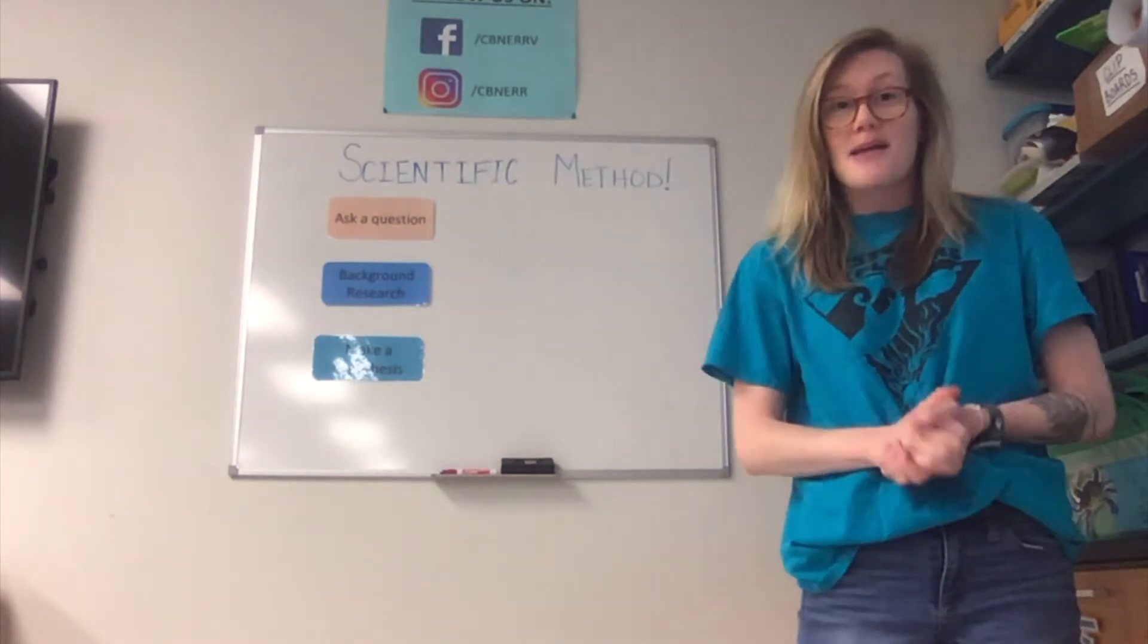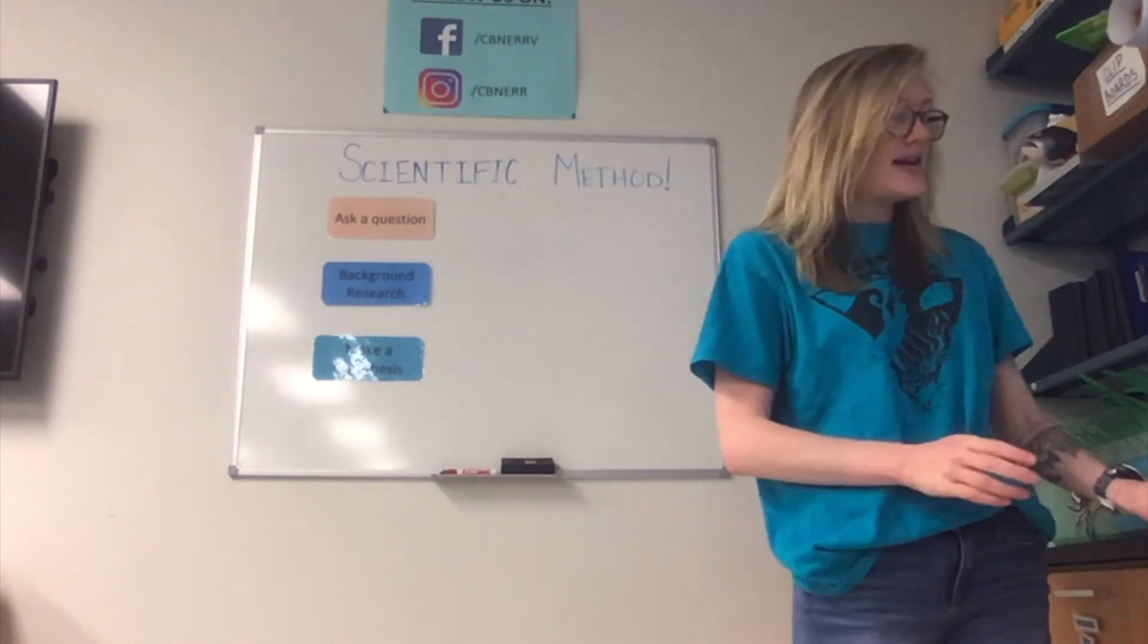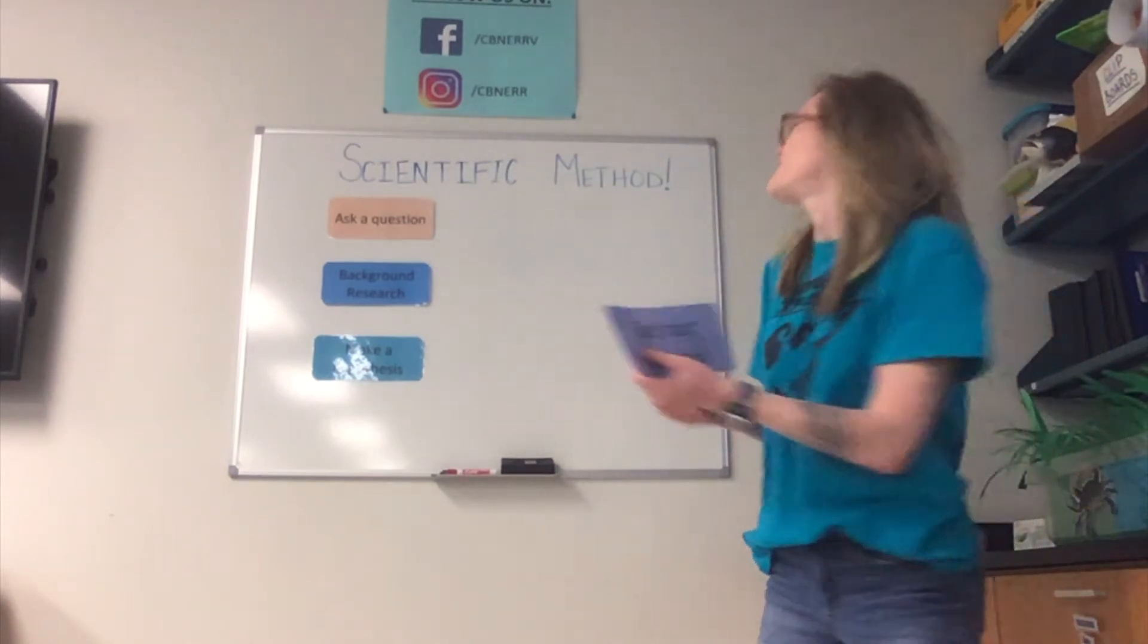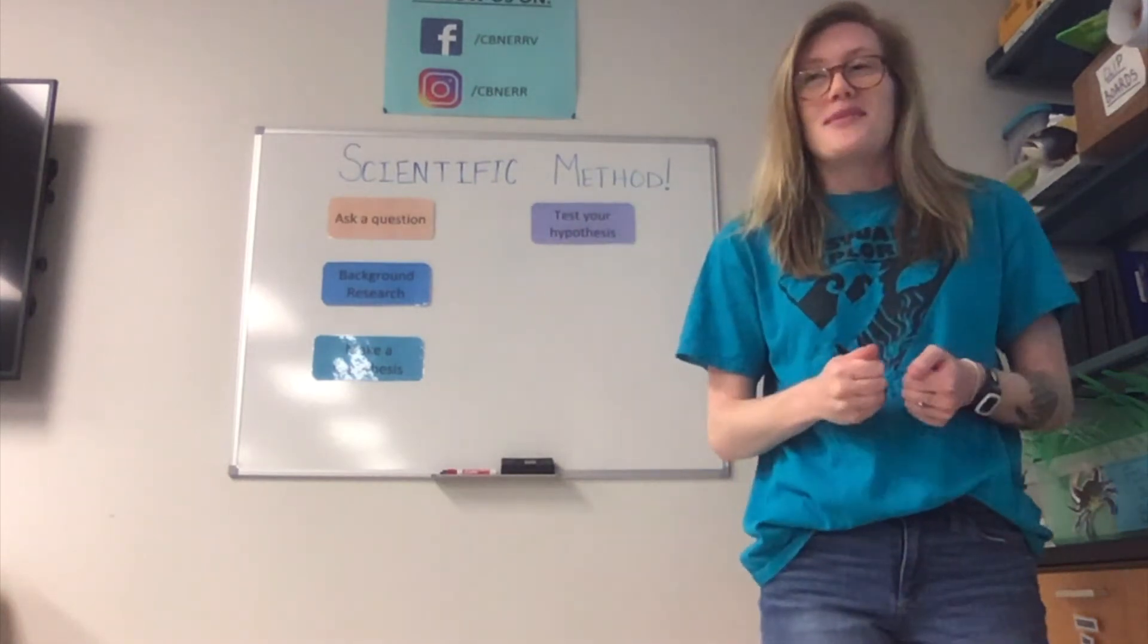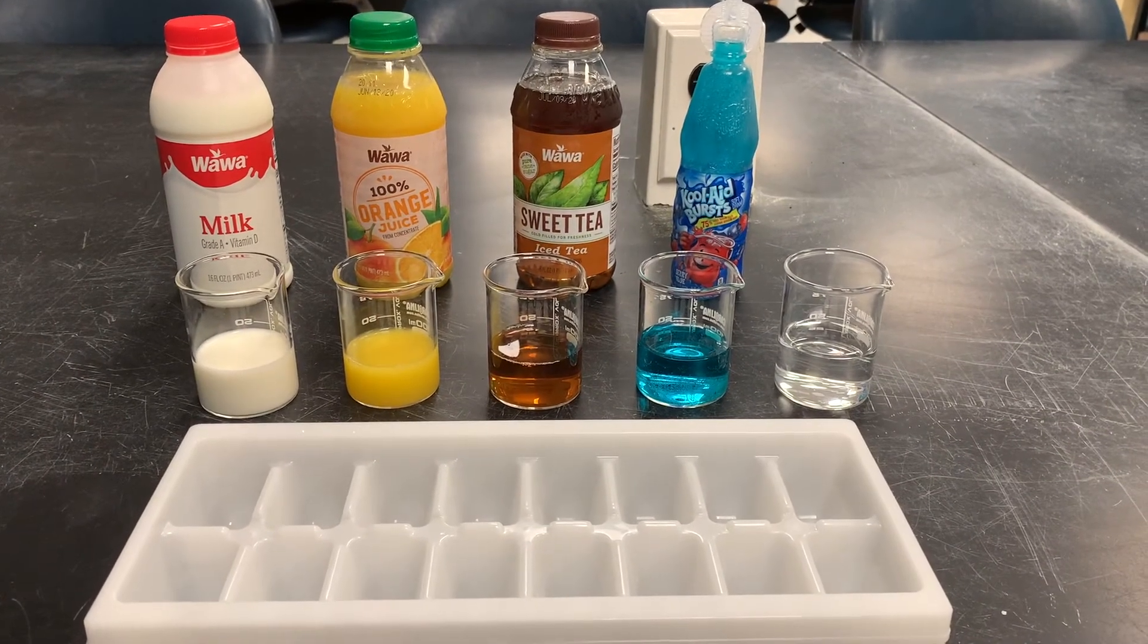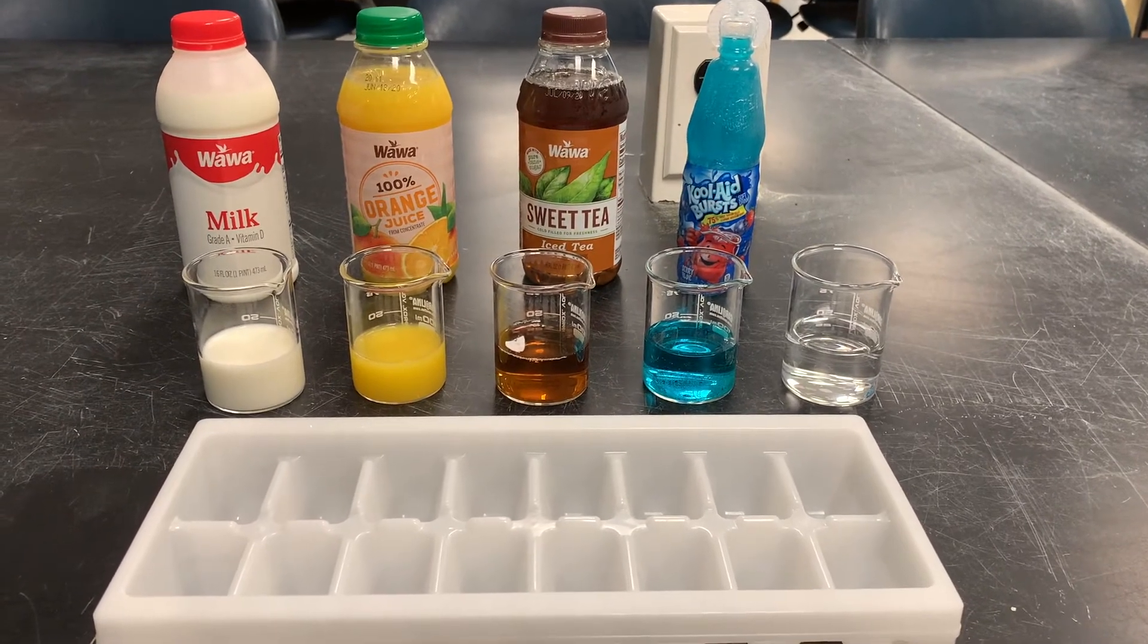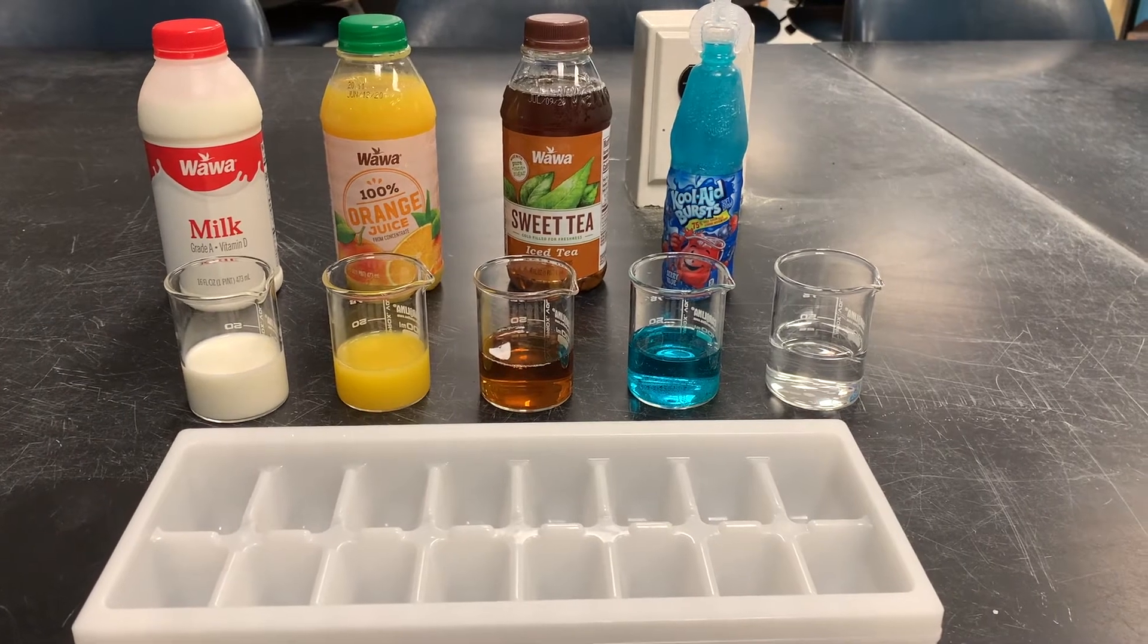Now that we have formed our hypothesis, we're going to jump into step number four of the scientific method and that's going to be testing your hypothesis. In my opinion this is the best step because this is actually where we get to jump in and conduct our experiment. For today's experiment we're going to see which one of these five liquids freezes the quickest: maybe it's milk, orange juice, sweet tea, a Kool-Aid Burst, or water.